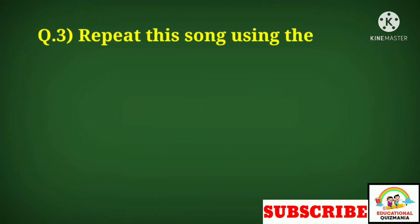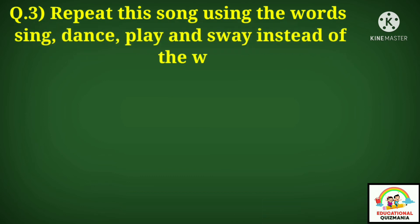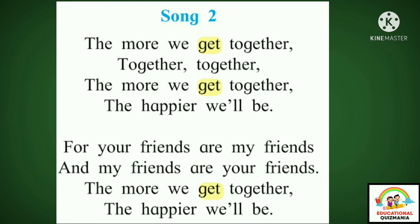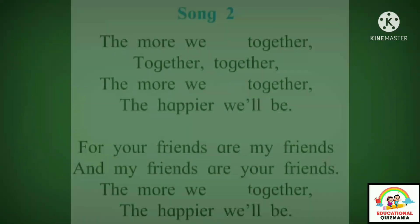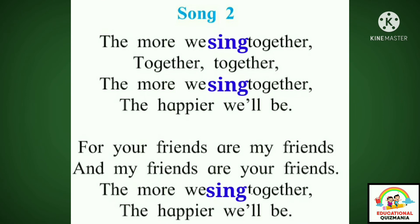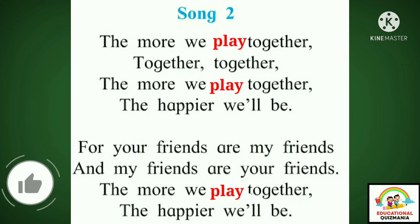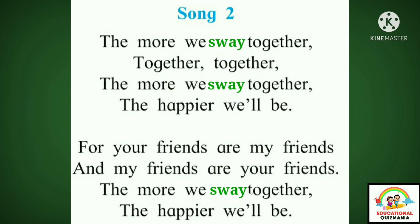Question number three: repeat this song using the words sing, dance, play, and sway instead of the word 'get'. Together, together, together — the more we sing together, the happier we will be. For your friends are my friends and my friends are your friends, the more we sing together, the happier we will be. Similarly, use the words dance, play, and sway to repeat the song.